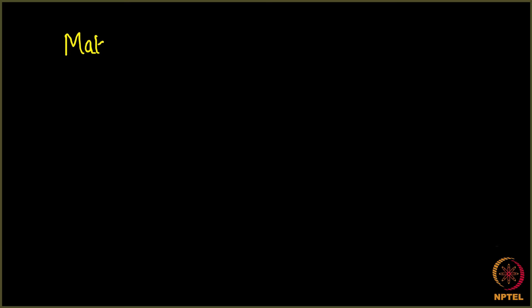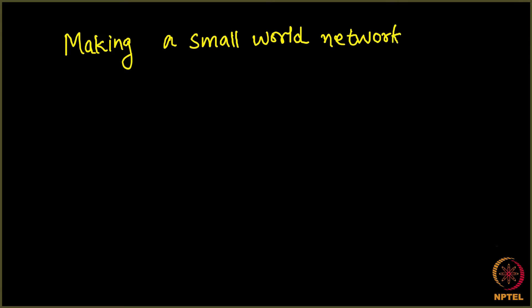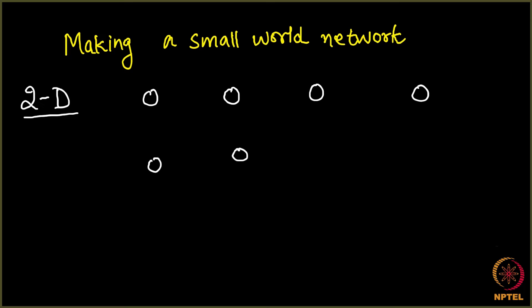Let's look at the first one: how do we code, how do we make a small world network. Let's talk about the model which we looked at in the lecture. You will remember how we model it in two dimensions. In a two dimensional space, we have certain nodes. Let's say I put some 16 nodes over here.